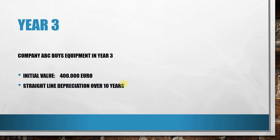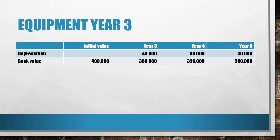In year three there is a change: the company decides to buy more equipment. They buy equipment with a value of 400,000 euro and will again apply straight-line depreciation over 10 years. The depreciation table for the new equipment shows an initial value of 400,000 euro, with a 40,000 euro depreciation each year, so at the end of year three the book value would be 360,000 euro.